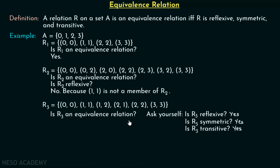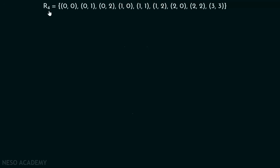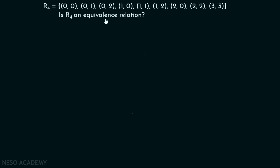Now let's see relation R4, which consists of the ordered pairs: (0,0), (0,1), (0,2), (1,0), (1,1), (1,2), (2,0), (2,2), (3,3). Is R4 an equivalence relation?